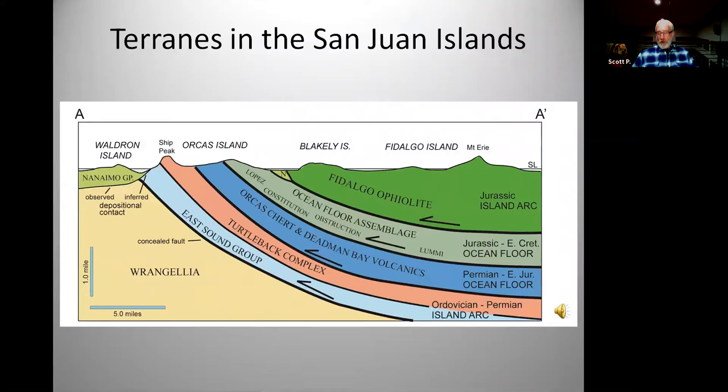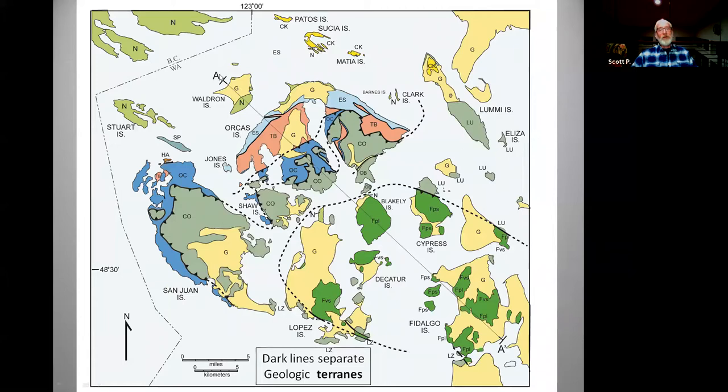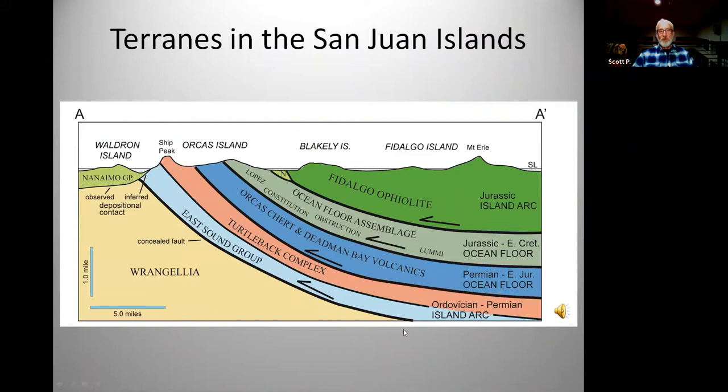Let's look at another cross-section along this line, cutting the crust and looking at it sideways — this is very stylistic, since we don't actually know what's happening way down there. We've got the Fidalgo Ophiolite on the far east overriding all of these other terrains in the San Juan Island area. Going from 450 million years to the youngest sediments in the Fidalgo Ophiolite — the youngest are about 140 million years old.